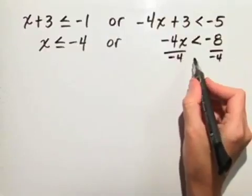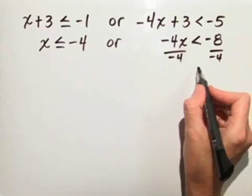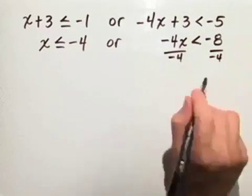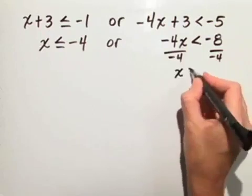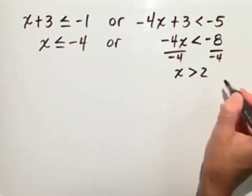Remember, any time you multiply or divide by a negative number in an inequality, you reverse the direction. So we have x is greater than positive 2.